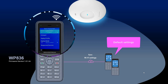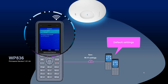When you select Hotspot, it will display the hotspot SSID and password. By default, all WP devices are configured with this SSID information. This allows WP devices to connect with other devices through this hotspot and transfer data.